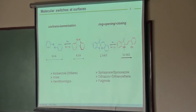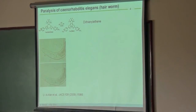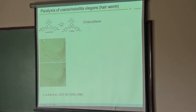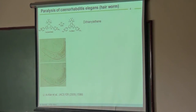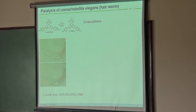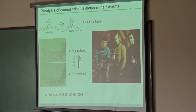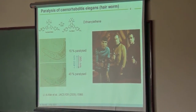Switching processes are usually started by absorption of a photon, exciting the molecule into the other state. Another example — a ring-opening ring-closing molecule called DC — was fed to hair worms, which make up 80% of organic life on earth. This switch changes color to more blue and actually paralyzes the hair worm so it stops moving. That's what researchers do and publish.